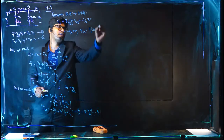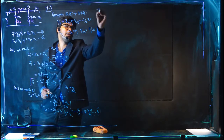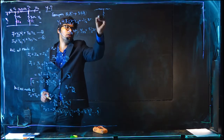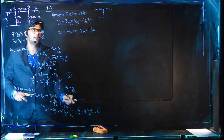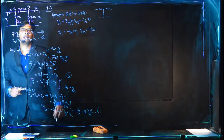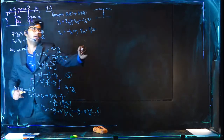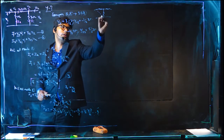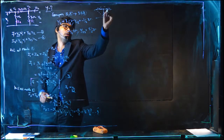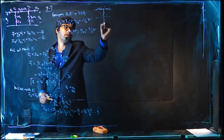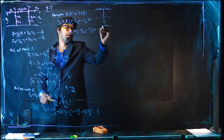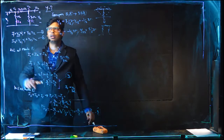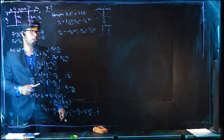For example, if a T circuit is given, you need to transform it to Pi form to find Y parameters. The T circuit is in star form, so you convert it into Pi (delta) form. Once you have the Pi form, you apply this procedure.